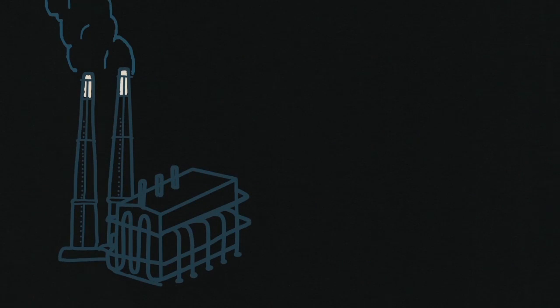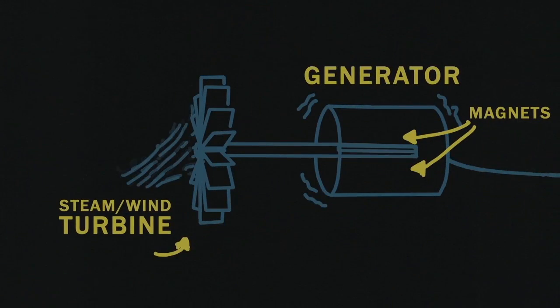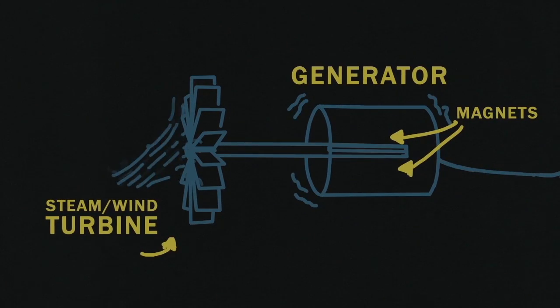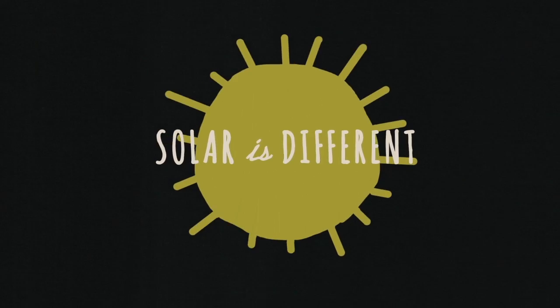Natural gas plants, nuclear plants, and wind turbines are all massive devices that use mechanical energy to rotate magnets, producing a current that we can transmit through the electrical grid. Solar is different.